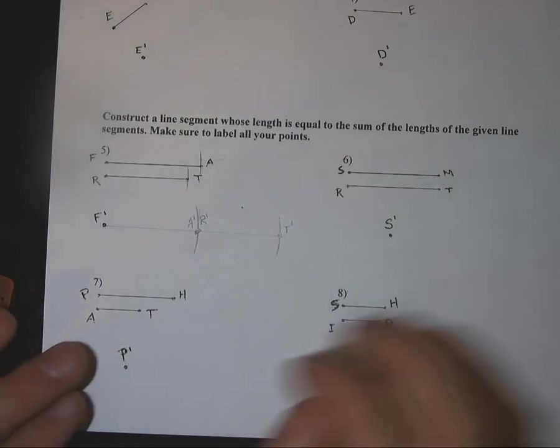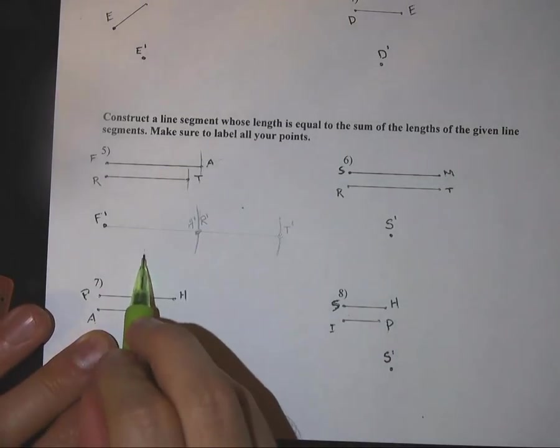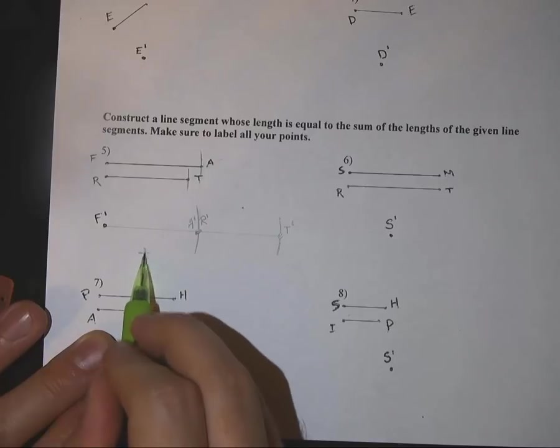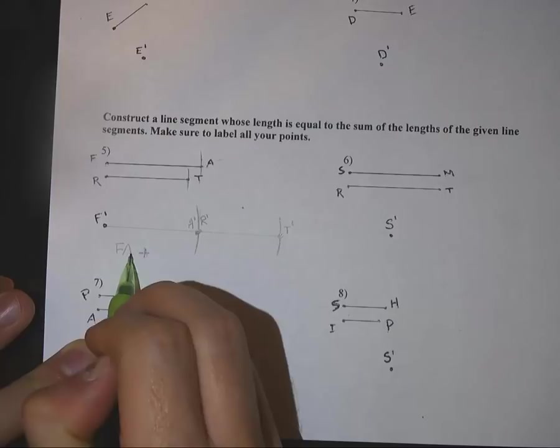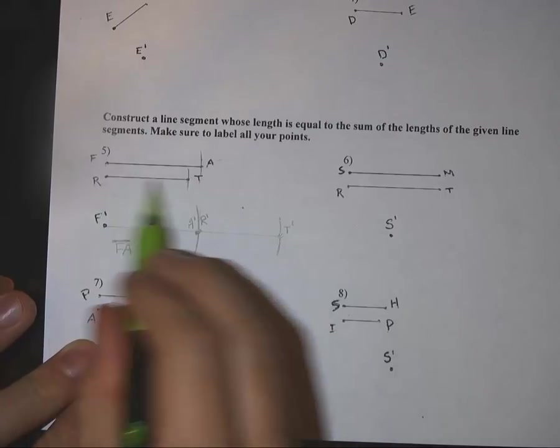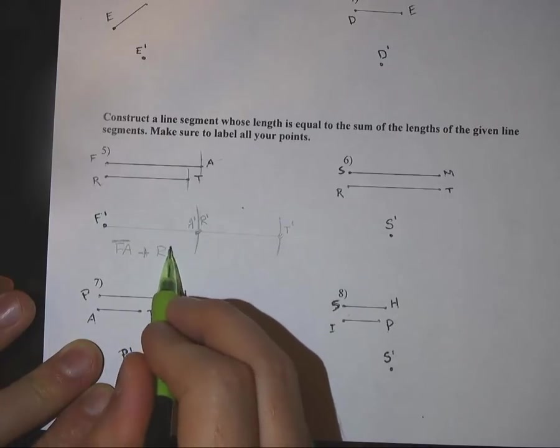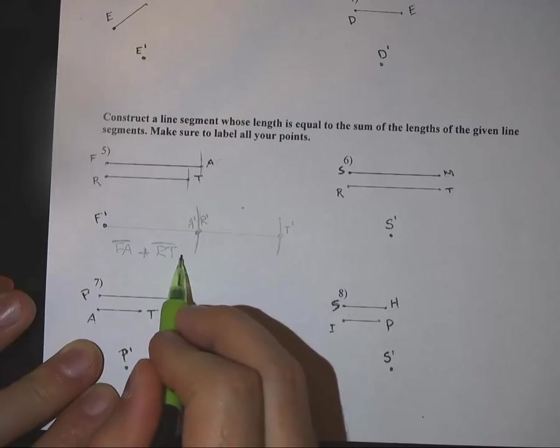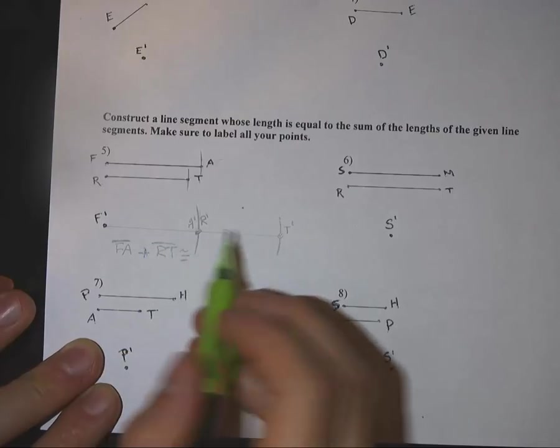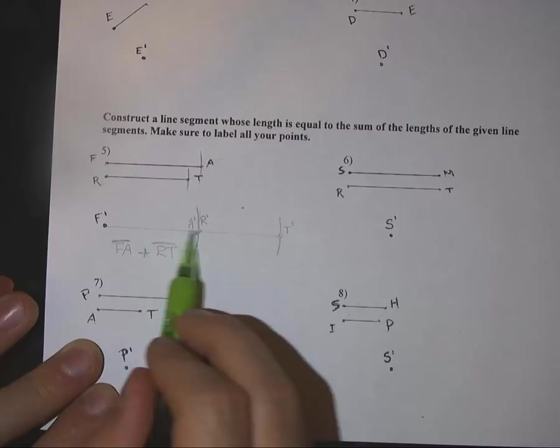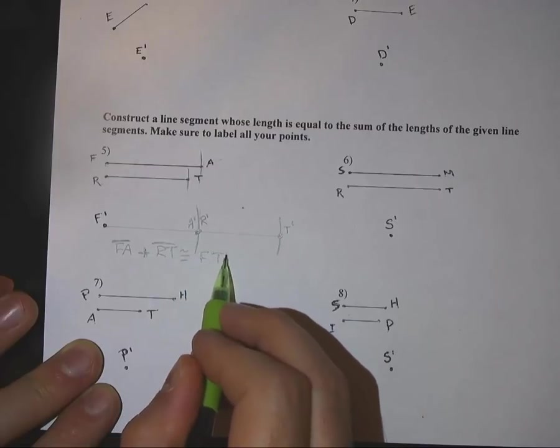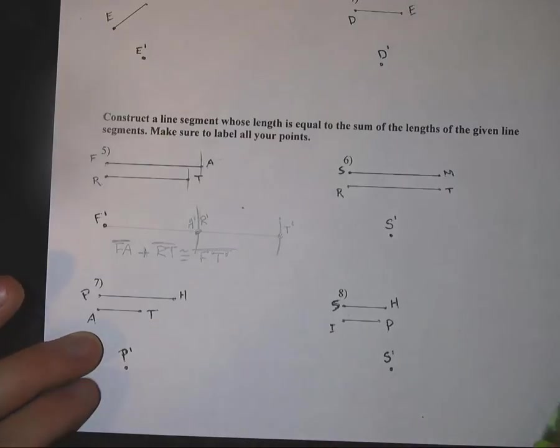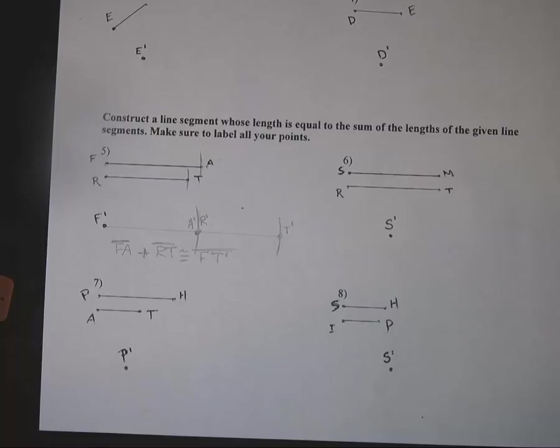And then now for the notation. Because we are talking about sums, we will be adding two line segments. It was FA, line segment FA. Don't forget the line segment symbols. Plus RT. And that is going to be congruent to F prime T prime. Don't forget the line segment. And that's how you guys are going to complete 5, 6, 7, and 8. Good luck.